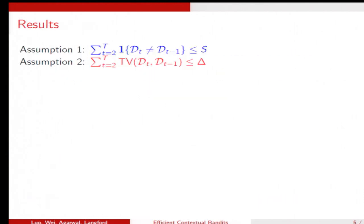What are our assumptions? The assumptions are reasonable. We assume that the first kind of assumption is that the distribution doesn't change too frequently. So they don't change more than s times.